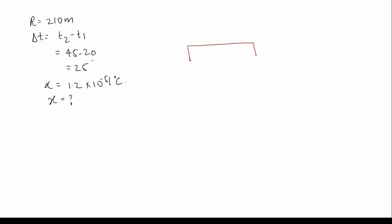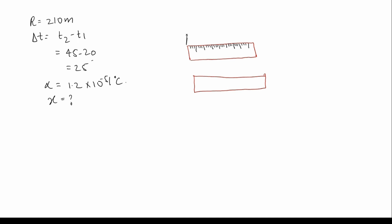Consider this is the steel tape. This is the second case — the markings go 10, 20, 30, 40 and so on, which is the correct reading. On a day when the temperature is 20°C, the object would be measured as that much. But when the temperature is raised to 45°C, the scale will expand. As the scale expands, it will show a smaller reading, so the reading of the object will be reduced.